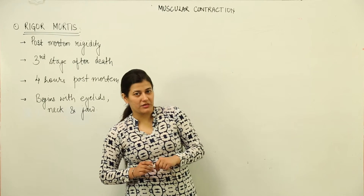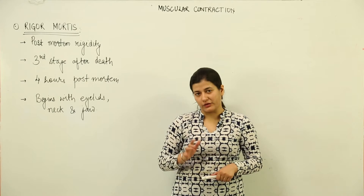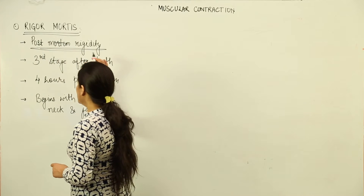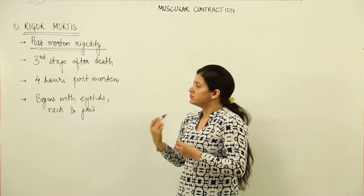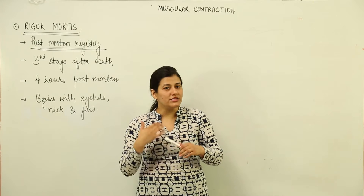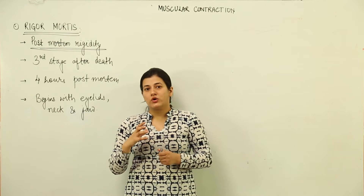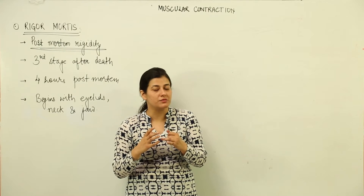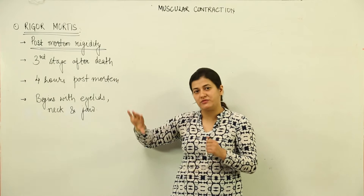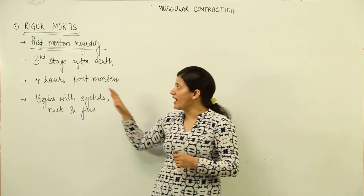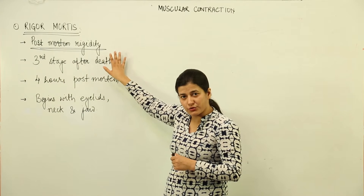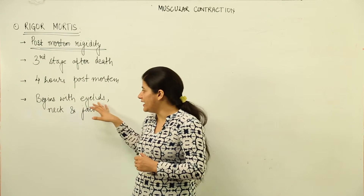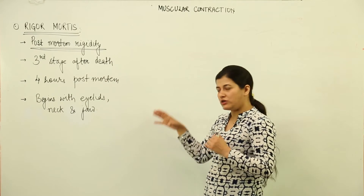The next important phenomenon associated with muscular contraction is rigor mortis. This term refers to post-mortem rigidity — the third stage after death, which occurs when limbs and other muscles undergo stiffness and the body cannot move. This stiffness occurs 3 to 4 hours after death and begins with the eyelids, neck, and jaw.